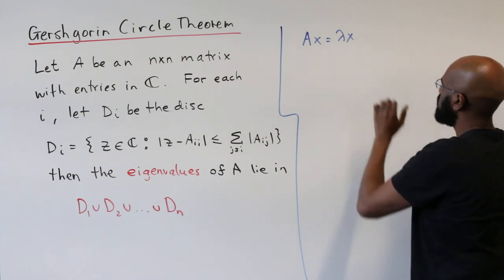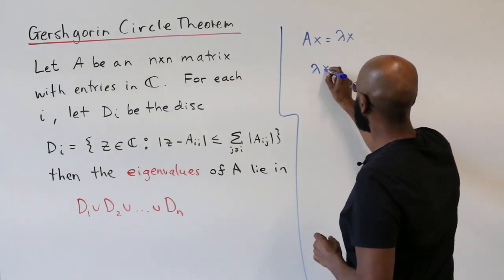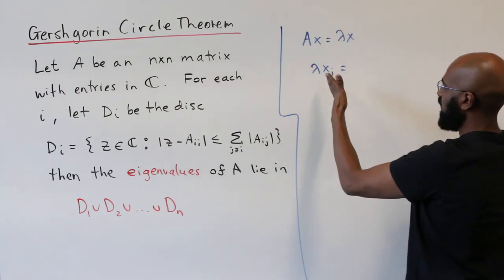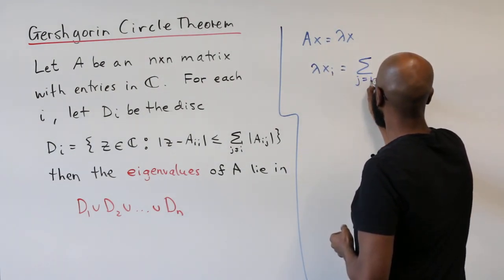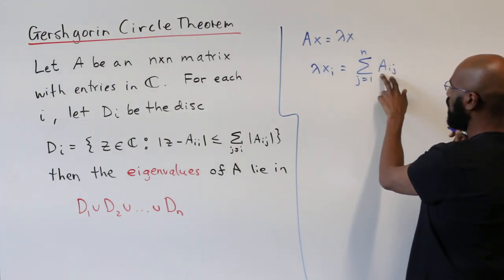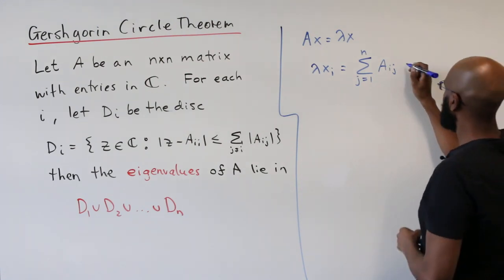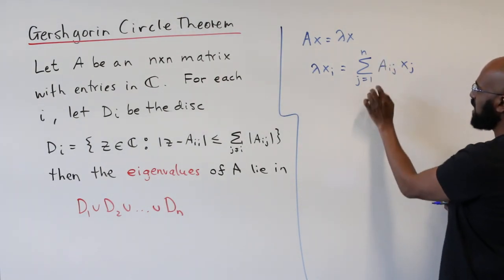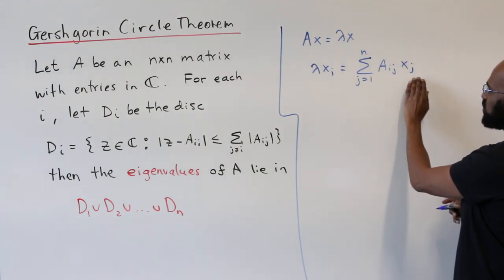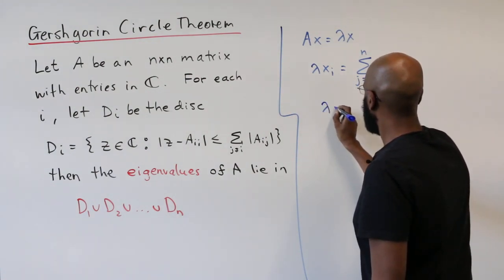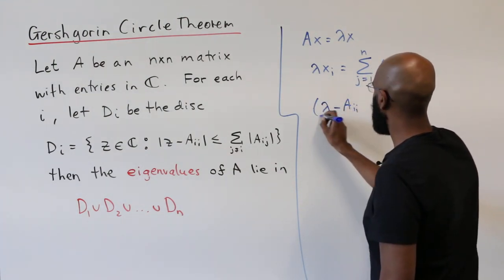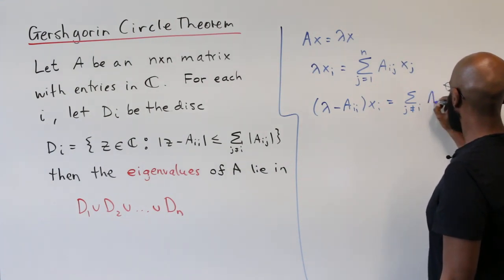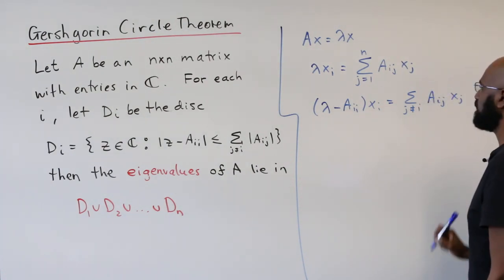Now, if you look at the i-th component of each of these things, here we'd get lambda x sub i. And then on the right-hand side, we'd have the dot product of the i-th row of A with the vector x. So that'll look something like the sum j equals 1 to n, Aij, so we're running through all of the entries in the i-th row of A, times x sub j. Now, one of these indices where j runs from 1 to n is going to be i itself, and we'll have A i-i as a coefficient. So let's move that one over.